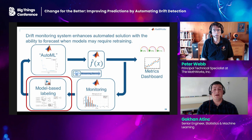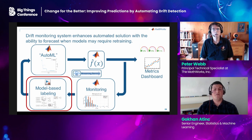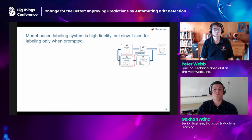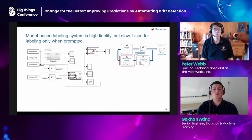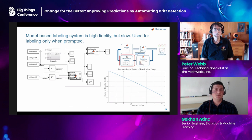Our drift monitor allows us to do just that. When it raises a flag, we propagate the drifting data through our model-based labeling system to automatically label the data. Note that our machine learning problem is not a classification problem — it's a regression problem. However, for the sake of having a generic module name, we simply refer to this module as the model labeling system. In our solution, we use a high-fidelity model-based labeling system implemented in Simulink. We propagate recorded observations through this system and estimate the ground truth response values — the state of health values for the batteries — by simulating the model dynamics.